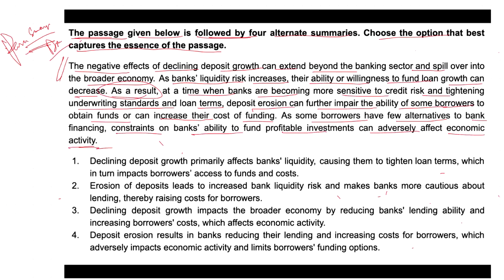Let's look at the options through the elimination process. Option one states: declining deposit growth primarily affects bank liquidity, causing them to tighten loan terms, which in turn impacts borrowers' access to funds and cost. However, this focuses only on the direct effects on banks and borrowers but doesn't fully capture the broader economic impact described in the passage. Hence, option one cannot fulfill the summary.